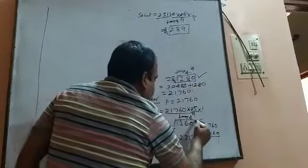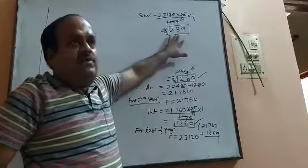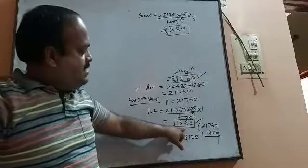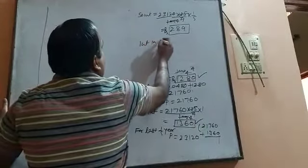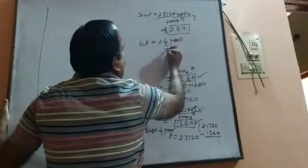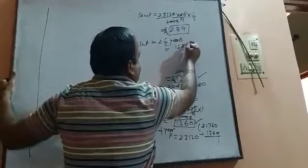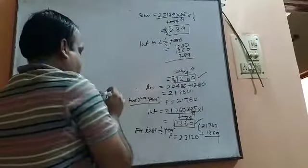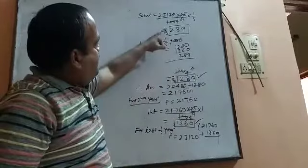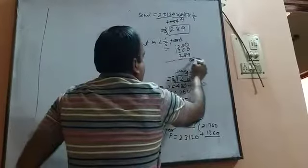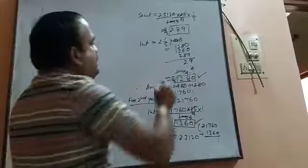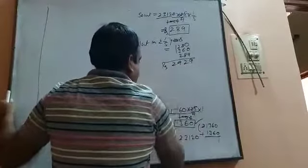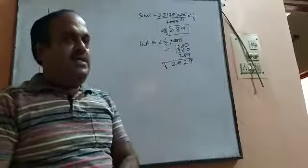So this is the interest in 1 by 5 year, this is the interest of the first year, and this is the interest of the second year. Therefore the total compound interest in 2 whole 1 by 5 years can be calculated by summing these three interests: 1,280 plus 1,360 plus 289, which comes as 2,929. Therefore the compound interest in 2 whole 1 by 5 years on a principal of 20,480 rupees is 2,929 rupees.